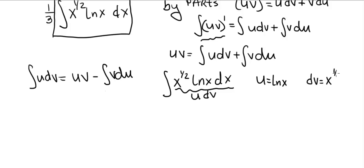dv is the rest of it, x to the one-half times dx. So du is one over x dx, and v could be any anti-derivative of x to the one-half. 99.99% of the time, the constant of integration should be zero. And that's what it is here. So this is two-thirds x to the three-halves.